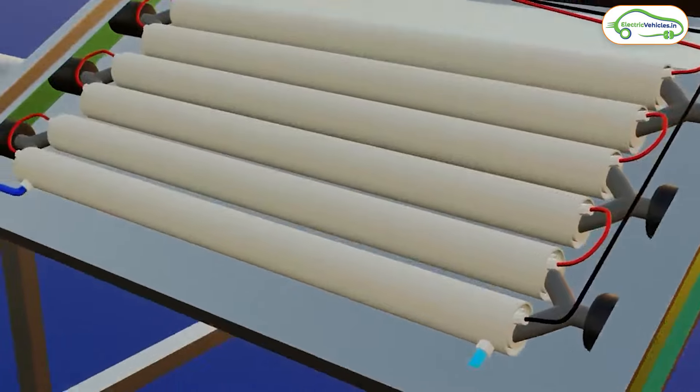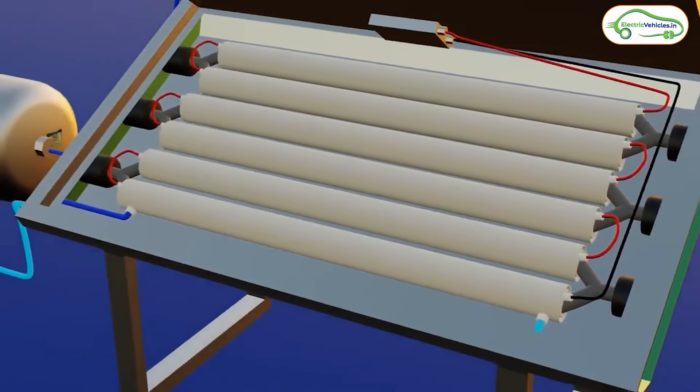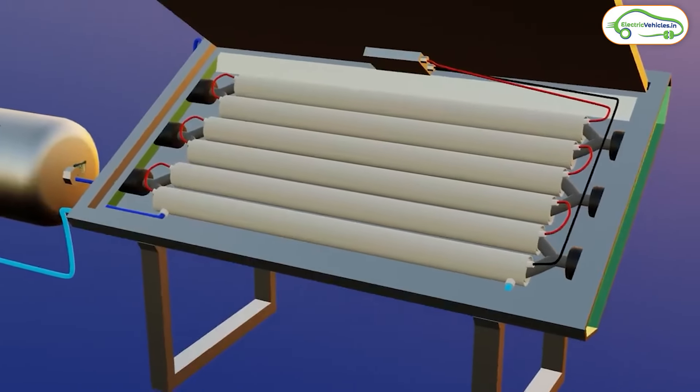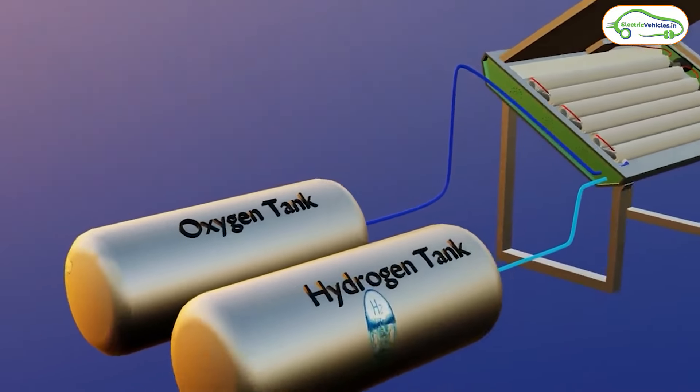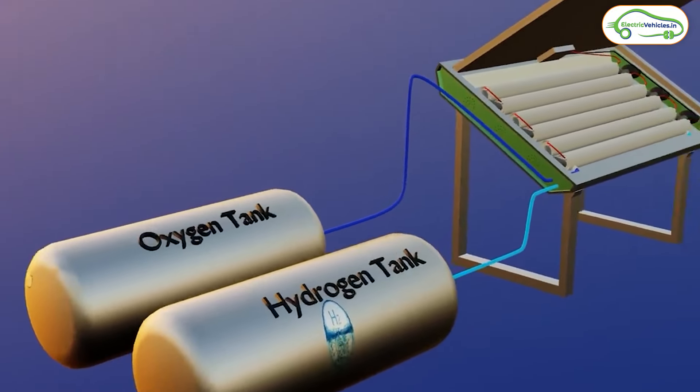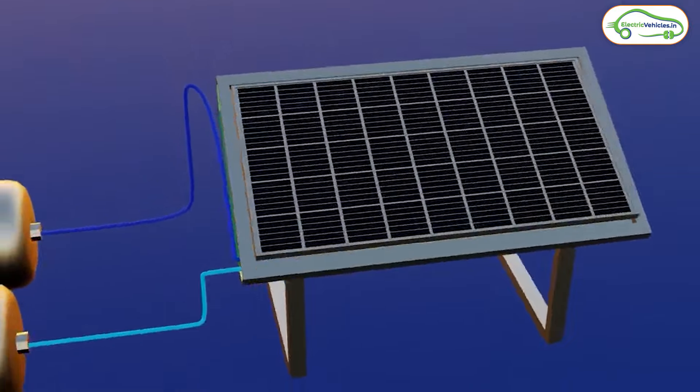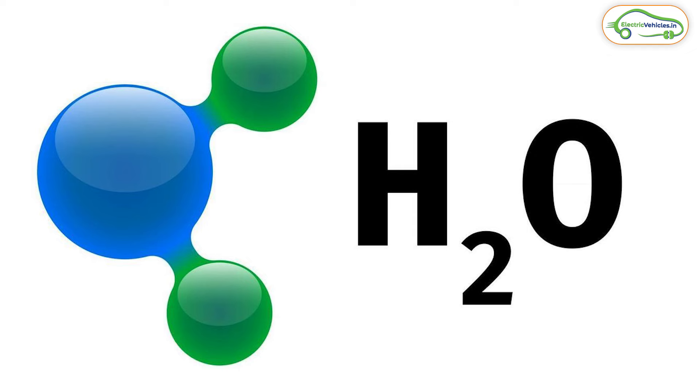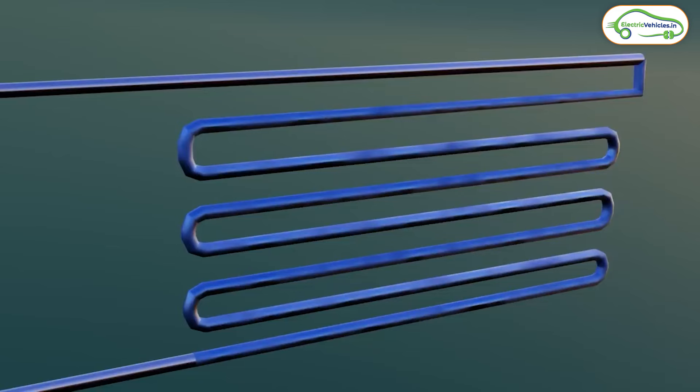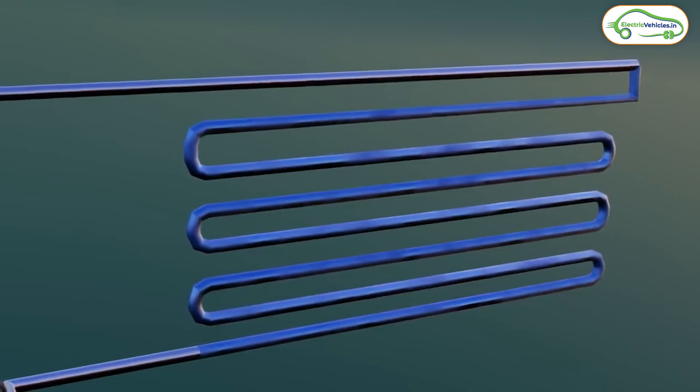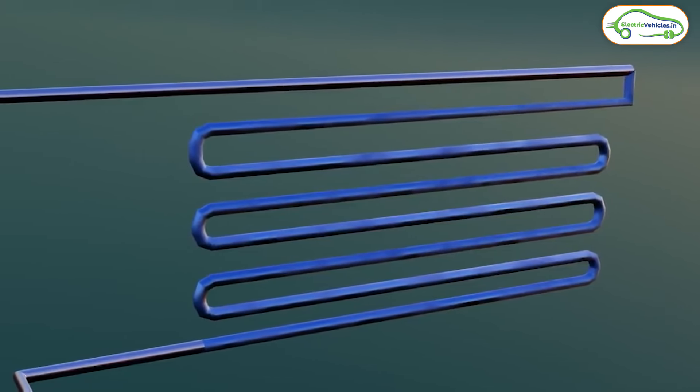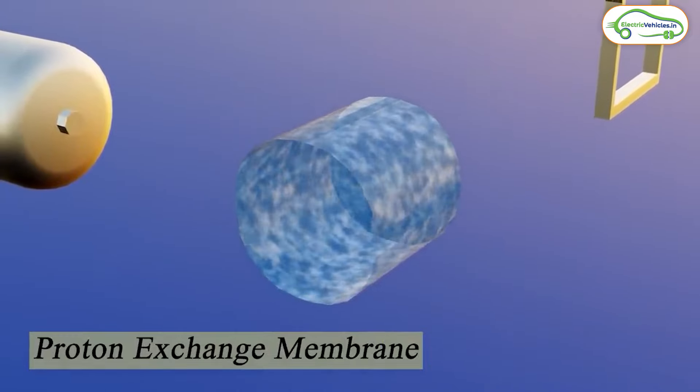Basically, these hydrogen solar panels absorb and store moisture which is in the air inside the tubes. Moisture has pure form of water and these tubes store that water throughout the night. Then in the daytime, it uses heat energy from the sun and converts that water into hydrogen and oxygen. The molecular formula of water is H2O. These hydrogen solar panels divide H2O into H2 and O2 by using heat energy.